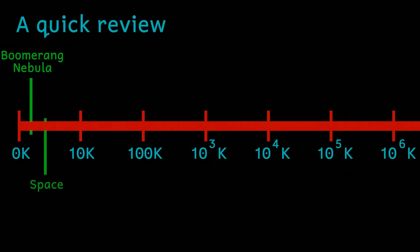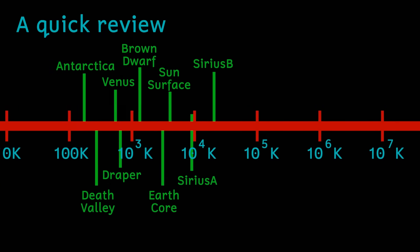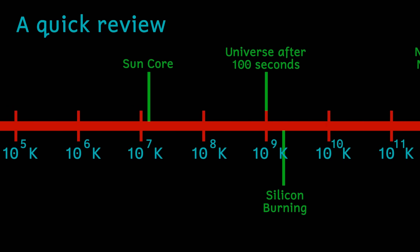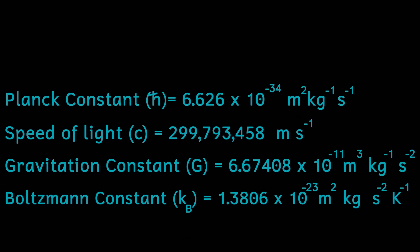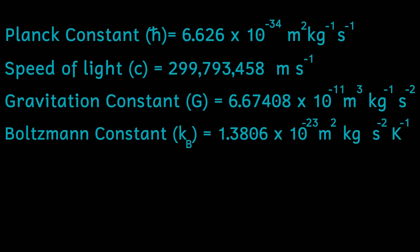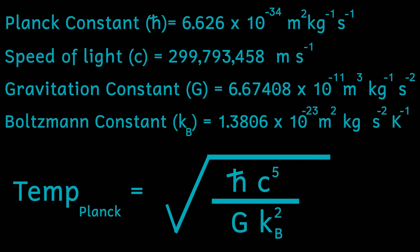But before we try to imagine just how unbelievably hot the Planck temperature is, let's have a look at its implications — and here it's going to get very strange. Like the other Planck units, Planck temperature is derived from fundamental constants of the universe. Planck temperature combines the speed of light, the Planck constant, the Boltzmann constant, and the gravitational constant. But what does it mean? What are the reasons behind this temperature? Well, there are a couple of particularly interesting implications.